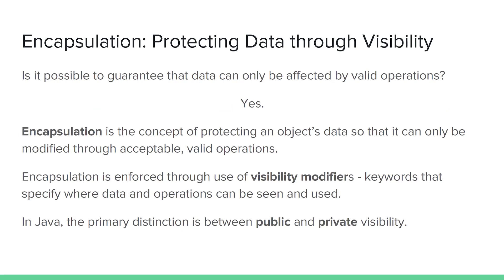So is it possible to guarantee that data can only be affected by valid operations? Yes. Encapsulation is the concept of protecting an object's data so that it can only be modified through a limited interface. In most languages, encapsulation is primarily enforced through the use of visibility modifiers — keywords that specify where data and operations can be seen and used. In Java, the primary distinction is between public visibility and private visibility. With public visibility, a piece of data or method can be seen anywhere, as long as the user has access to an object reference. Private, on the other hand, limits visibility to only within the class where the data or method was defined, excluding external visibility.